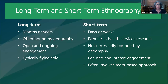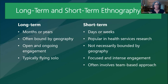Long-term participant observation, a hallmark of ethnography, can take place over months or years, whereas shorter-term ethnography takes place over days or weeks. Longer-term ethnography tends to be bounded by geography, while in shorter-term we tend to go to multiple places. Long-term ethnography is marked by open and ongoing engagement versus focused and intense engagement in short-term ethnography. With long-term, you're typically working solo — the lone ethnographer — whereas in implementation science we're reliant on a team-based approach.